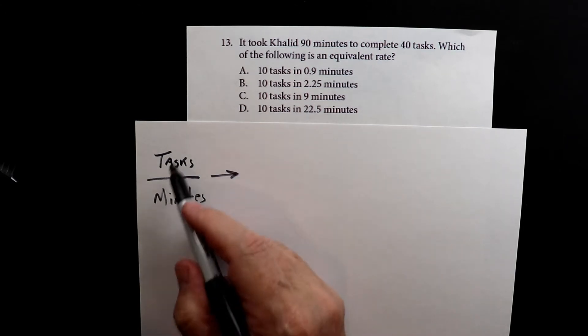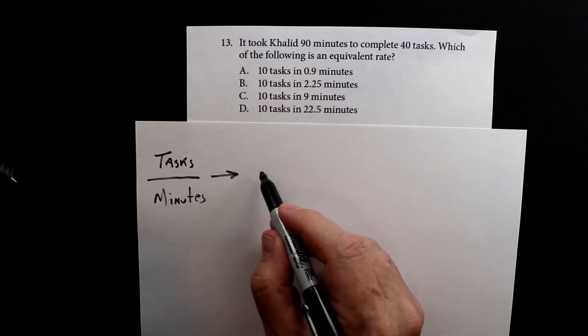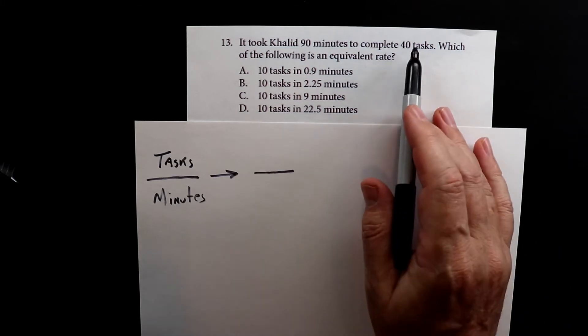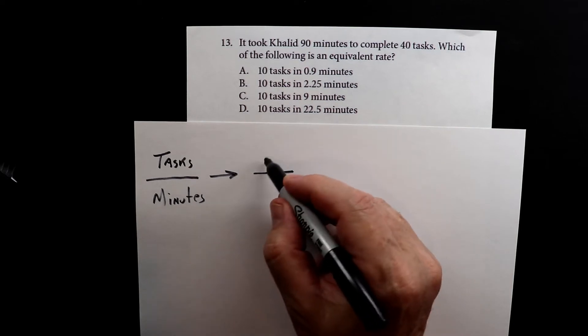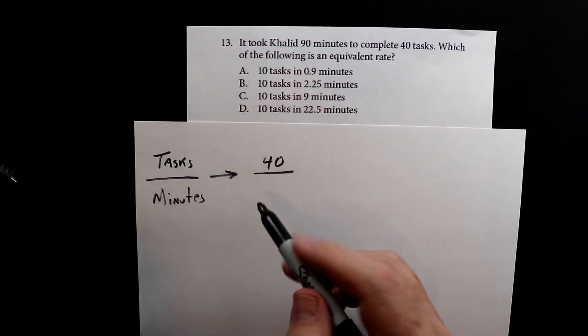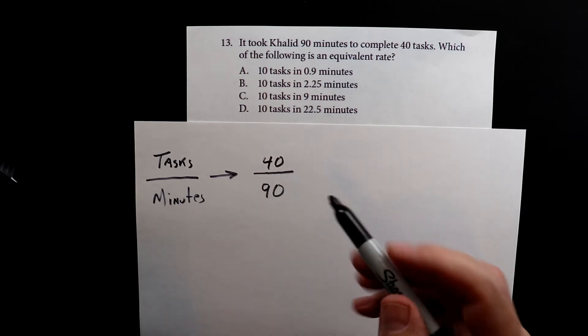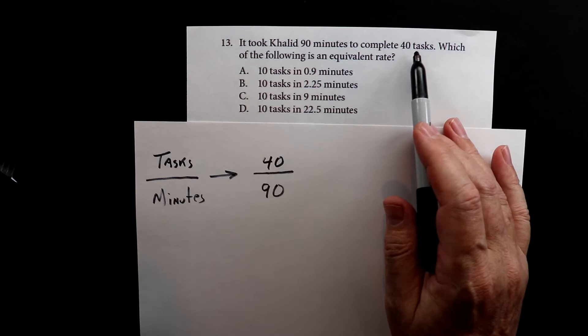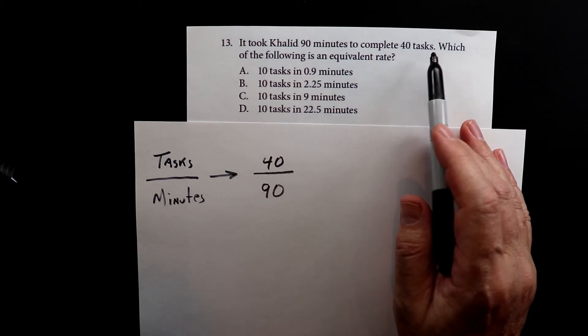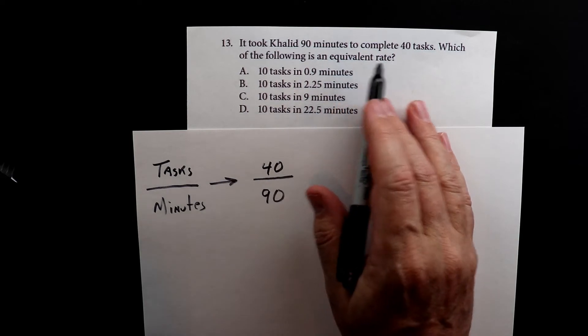So this is the way we're setting it, task over minutes. On the left side, we have 40 tasks, so we have 40 on the top and we have minutes on the bottom. So it took Kaled 90 minutes to do 40 different things. So we're going to try to find the equivalent rate.